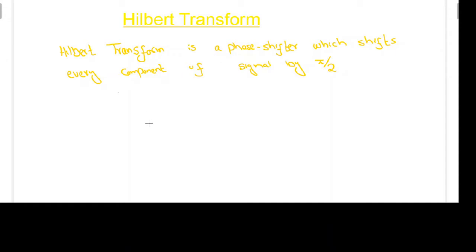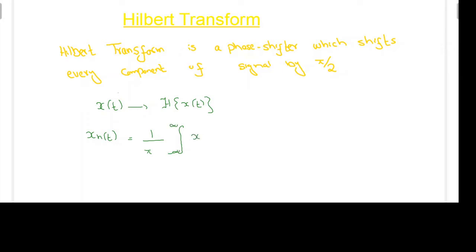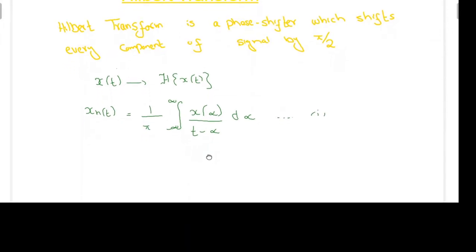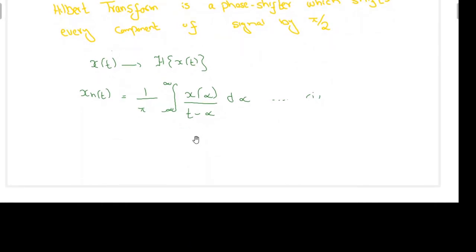Now how does it do this? We need to know its mathematical form. If I have a signal x(t) and I want to take its Hilbert transform, the resulting signal is denoted by x_h(t) and is equal to (1/π) times the integration from minus infinity to infinity of x(α) divided by (t − α) dα. This is equation 1. If you look closely, this is actually a convolution of x(t) with 1/(πt).